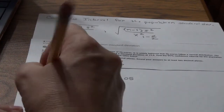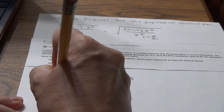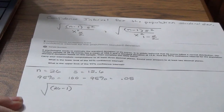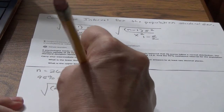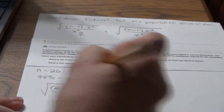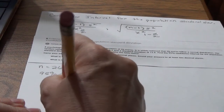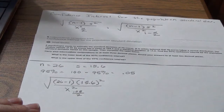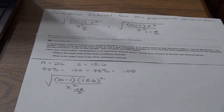Plugging into the formula, we are going to have the square root of n minus 1 — so 26 minus 1, you could just put 25 — then 15.6 squared (S squared), divided by chi-squared. I'm using alpha 0.05 divided by 2 for my first formula.